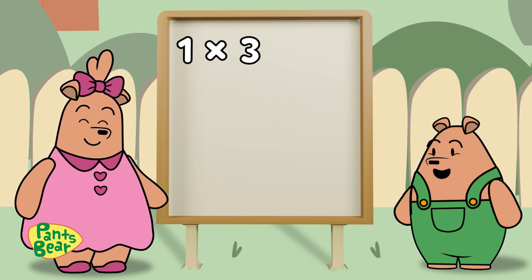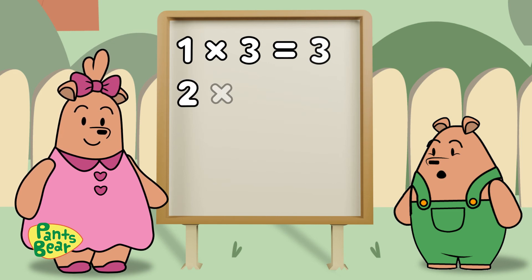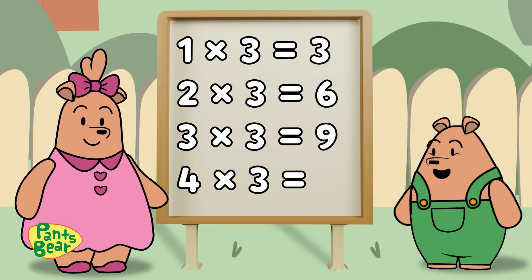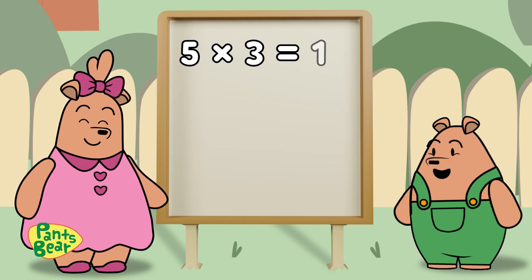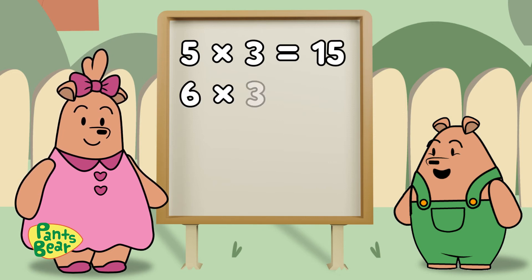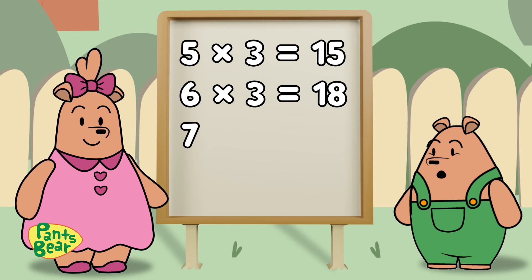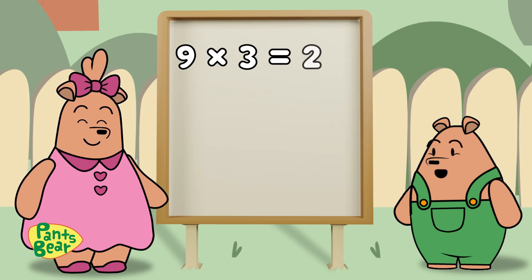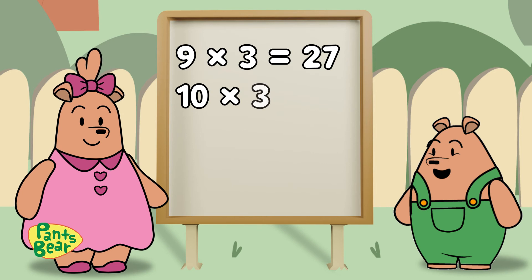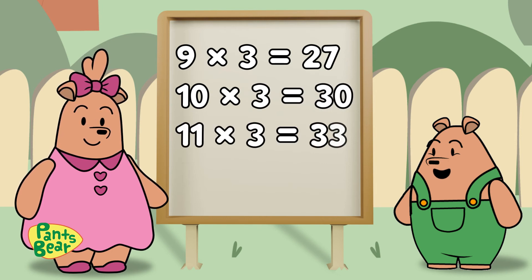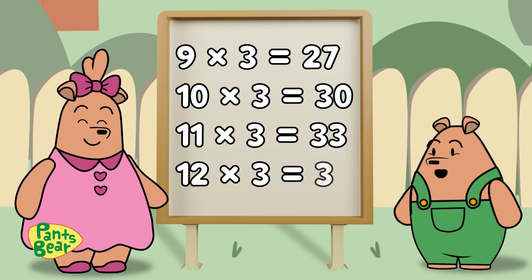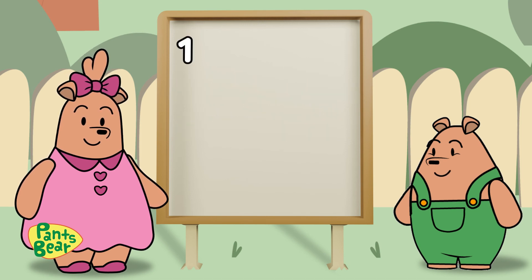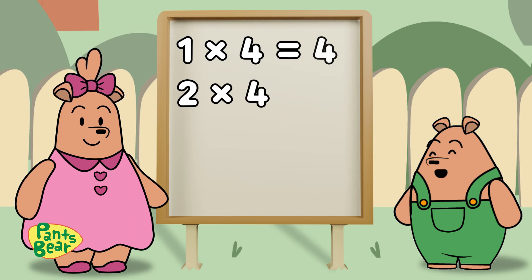Multiplication of 3. 1×3=3, 2×3=6, 3×3=9, 4×3=12, 5×3=15, 6×3=18, 7×3=21, 8×3=24, 9×3=27, 10×3=30, 11×3=33, 12×3=36.